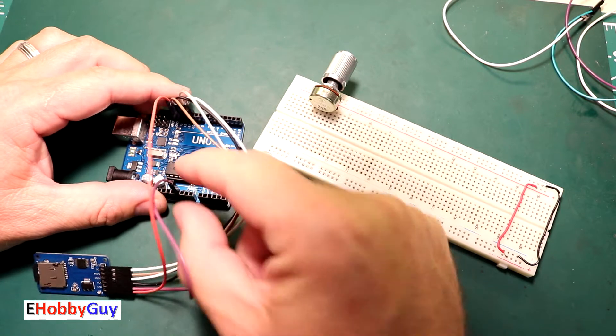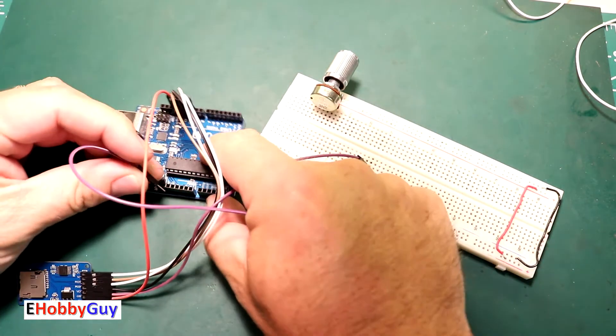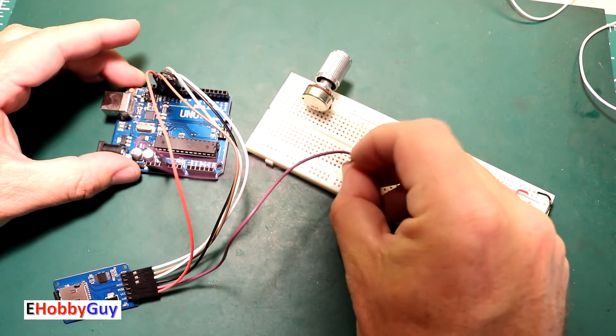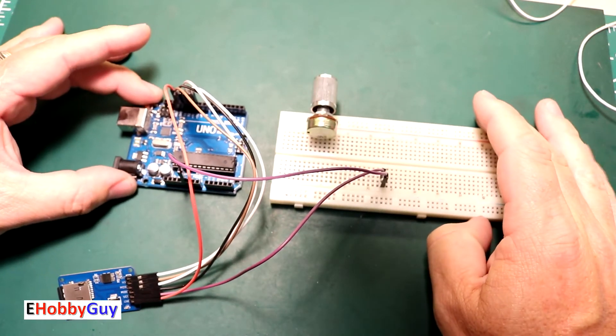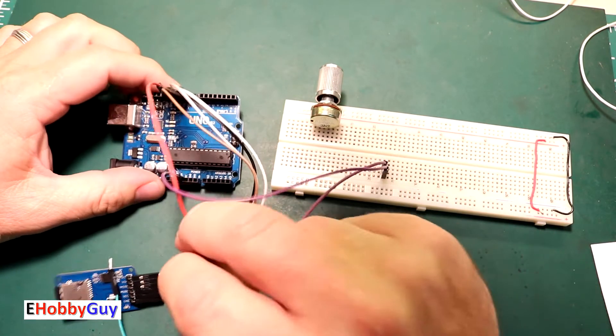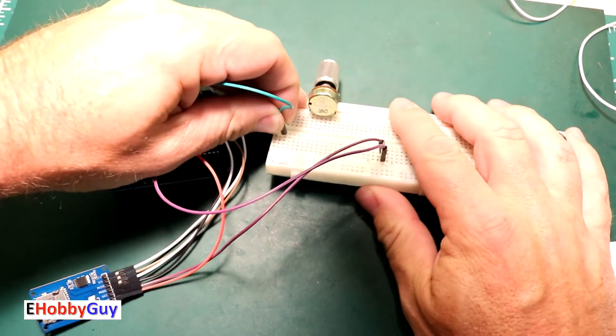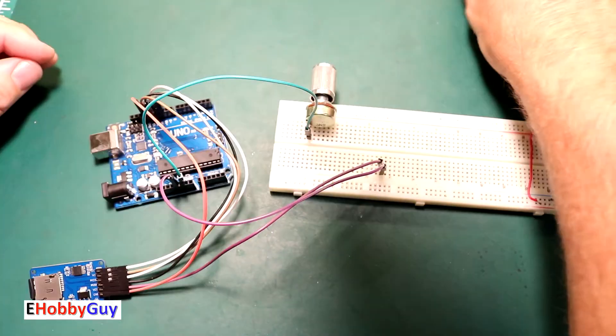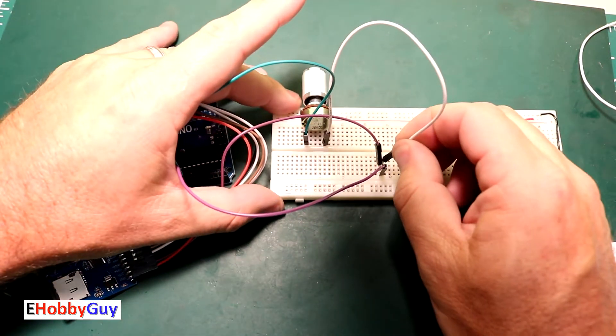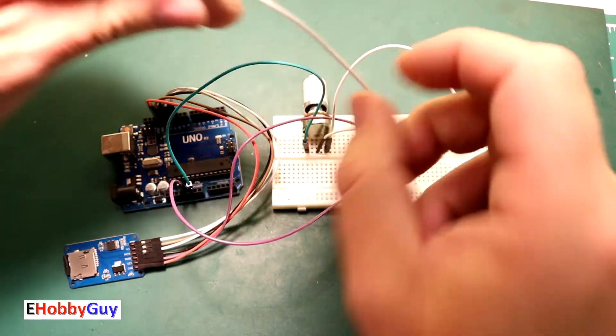I'm going to take the five volts coming out of the Arduino Uno and put it on a rail over here, then bring the five volts over to split it out and bring it into the potentiometer. I'm also going to take the ground from the board. I'll put this to one side of the potentiometer, the other side of the potentiometer gets five volts.